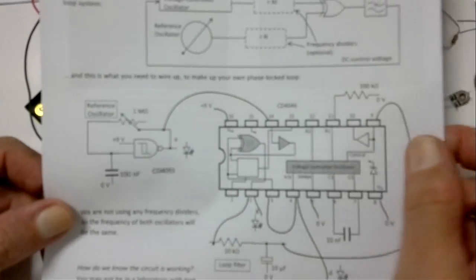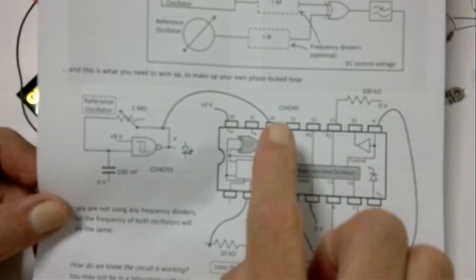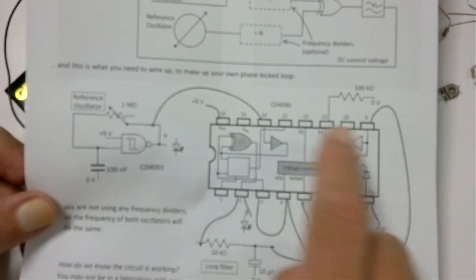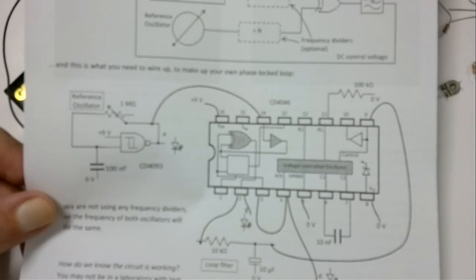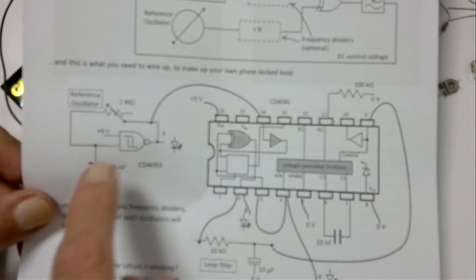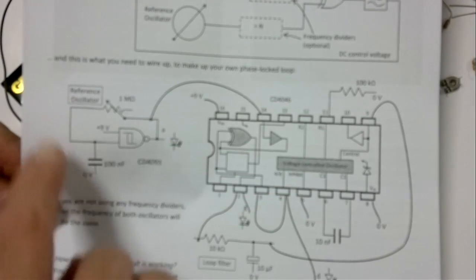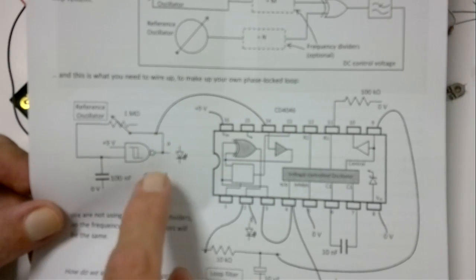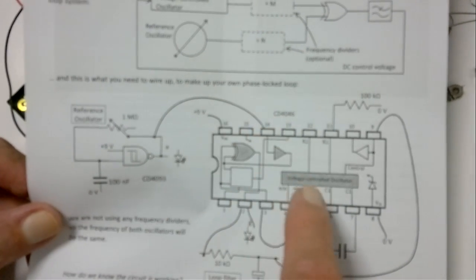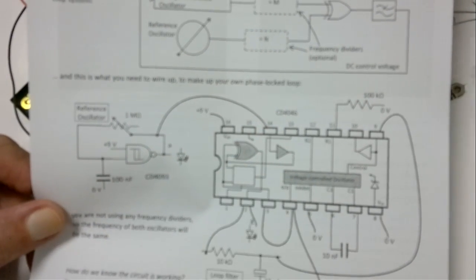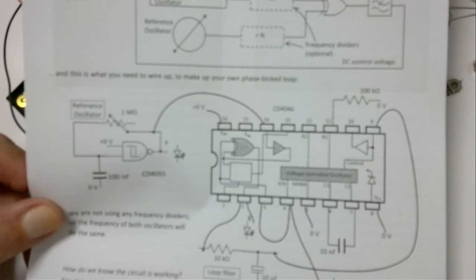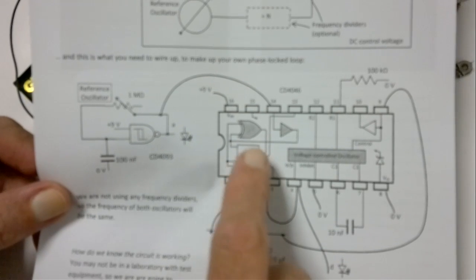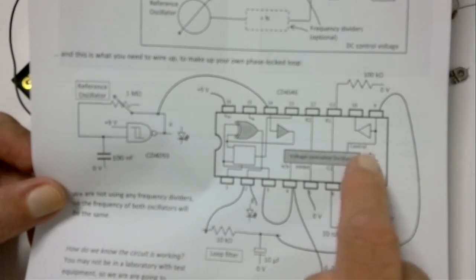So this is the circuit here. We use our good old favorite, the CD4046 phase locked loop IC, which has got most of the things inside. Our reference oscillator is going to be a little Schmidt trigger oscillator on the side, which we can adjust with a variable resistor. That's going to go into one input of our phase comparator, and the other input of the phase comparator is going to come from the voltage controlled oscillator.